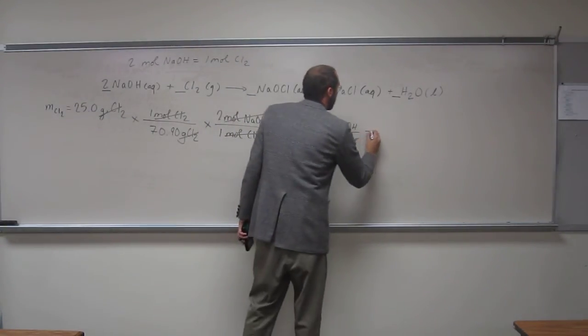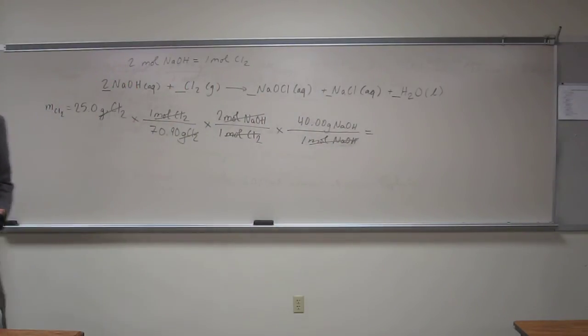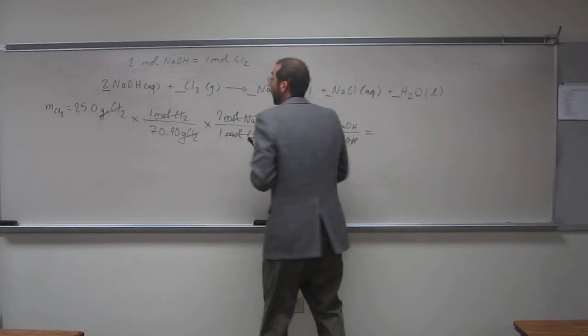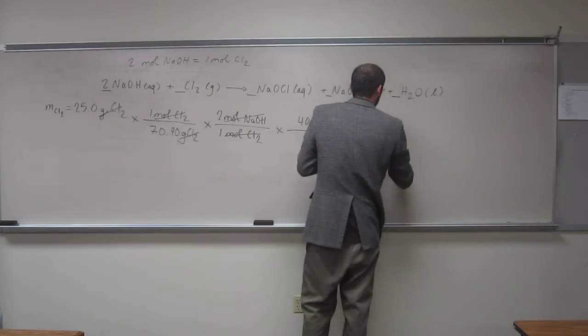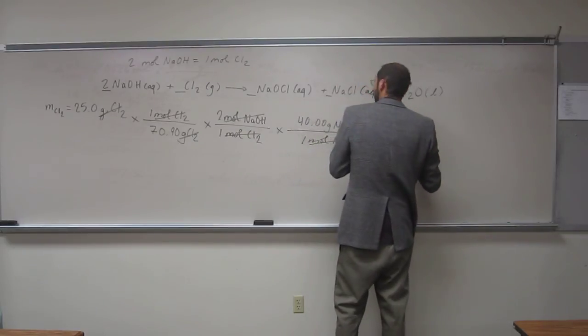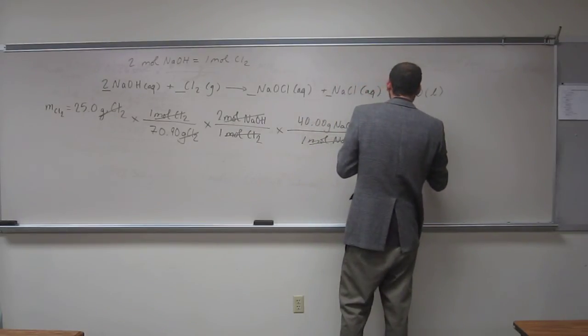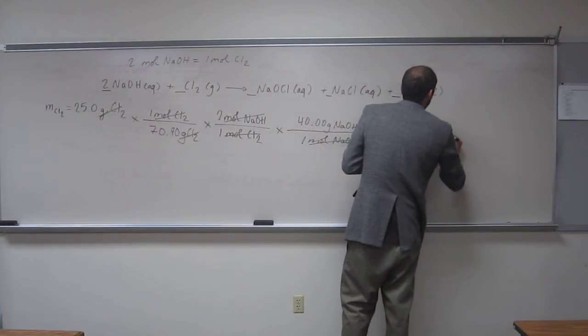That should give me the answer. So, 70.9 times 25... And to three sig figs, I got 28.2 grams of sodium hydroxide.